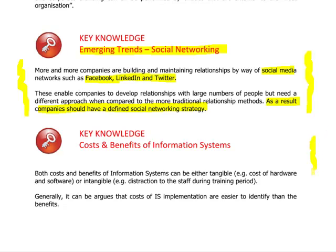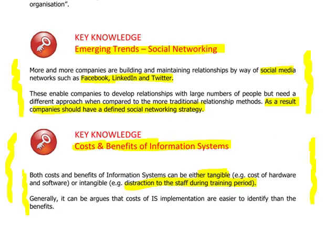The last area within this chapter is that there are lots of benefits of information systems, but also be aware of the costs. It's not just the tangible costs - the things you can physically see, such as hardware - there are also intangible costs. For example, distraction to staff during the training period is a cost of implementing new information systems. Okay, that finishes this video - thank you very much for listening.